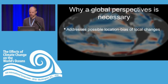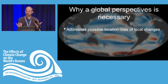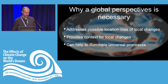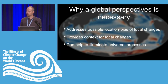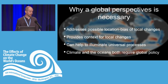Global models can also address perception bias from only local studies. If you just hear what's happening in Chesapeake Bay or Tokyo, it's hard to know whether those stories are biased — are those just anecdotes? How does it add up in the global picture? Global perspectives also provide context for local environments, can show you universal processes you may not notice by focusing on local systems, and both climate and the oceans require global policies.